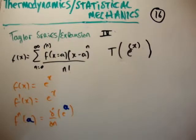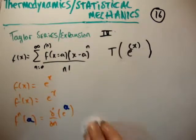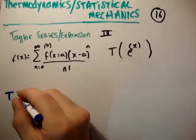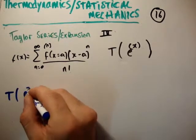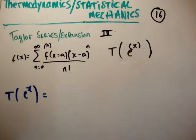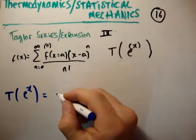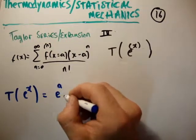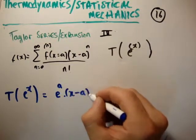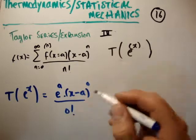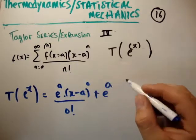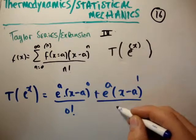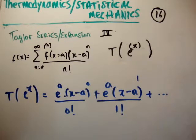So now let's just calculate our Taylor series. The Taylor series of e to the x is going to be e to the a times x minus a to the 0 divided by 0 factorial, plus e to the a, x minus a to the 1 divided by 1 factorial, plus and so on.